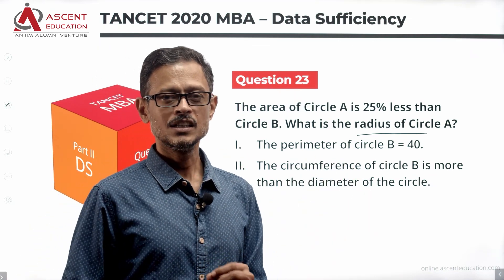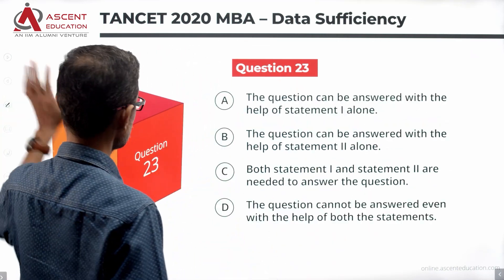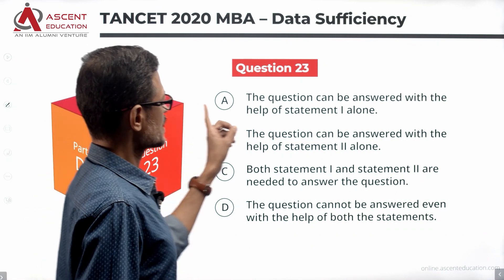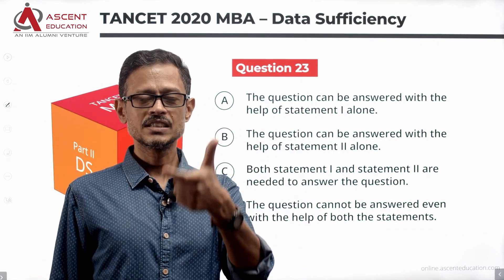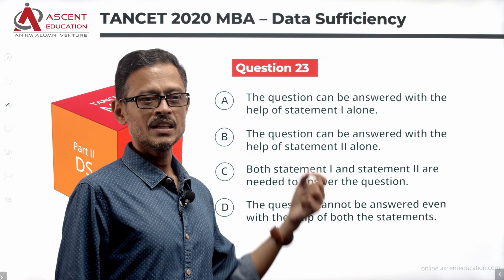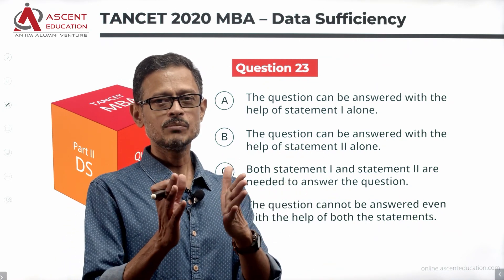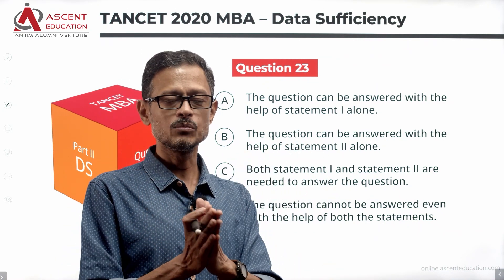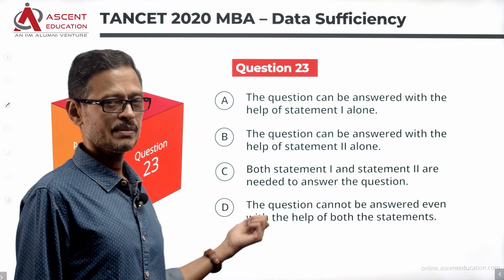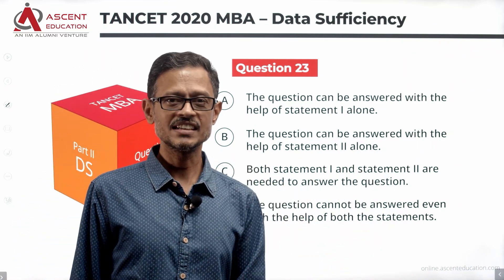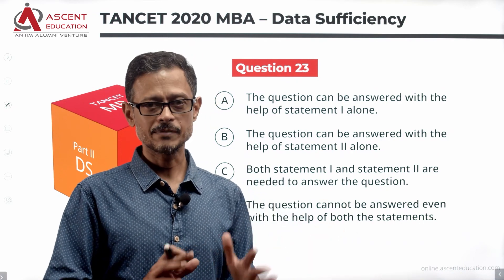Statements are given to you. Let's take a quick look at the answer options. The question can be answered with statement 1 alone — answer option A. With statement 2 alone — answer option B. Answer option C means both statements together. Answer option D means we will not be able to answer — we need additional data, data insufficient.